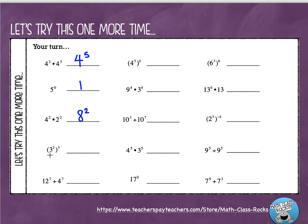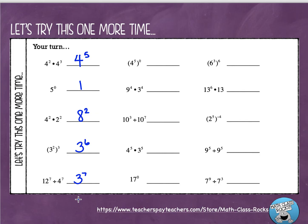Next example: three to the second to the third — that's a power to a power. Keep the base, which is three, and multiply the exponents: two times three equals six. The next example has different bases and the same exponent, so keep the thing they have in common — the exponent — and divide the bases: twelve divided by four is three, keeping the exponent.